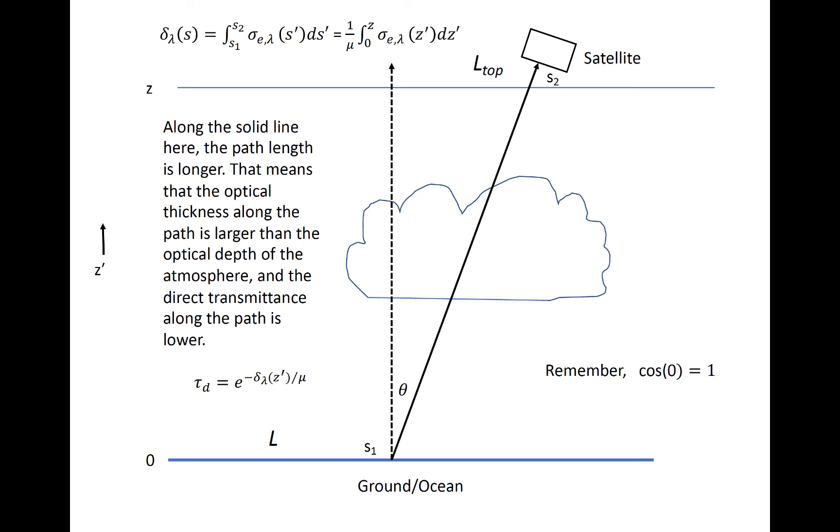The path that radiation travels along, however, doesn't have to be vertical. Suppose we want to know the optical depth along a path from the same point on the ground, we'll call it s1, to the satellite in this drawing, what we'll call s2. In this case, we have to consider the angle theta. The path along the solid line to the satellite is longer than the dashed line that points straight upward. So the optical depth, assuming that sigma e is horizontally homogeneous, will be larger along the solid line. In this case, we can say that the ground is point s1 and the satellite is point s2. The direct transmittance along this longer path will also be lower than the transmissivity along a vertical path.